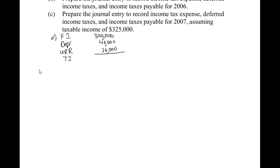The depreciation gets subtracted because we have more deductions on the tax return, so taxable income is going to be smaller — we subtract 40,000. The 20,000 is the exact opposite: we're going to have more income, so we add it to increase taxable income. That 40,000 is going to be our deferred tax liability and the 20,000 is our deferred tax asset, before applying rates. Our taxable income is 280,000. We multiply by this year's tax rate of 40%, so income tax payable is 112,000.